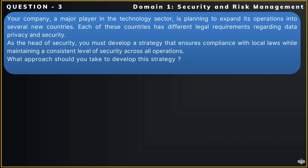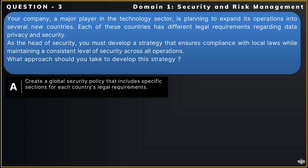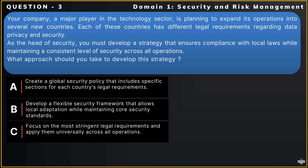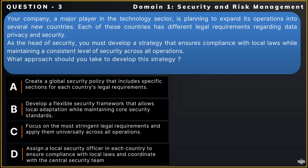The options are: Option A — Create a global security policy that includes specific sections for each country's legal requirements. Option B — Develop a flexible security framework that allows local adaptation while maintaining core security standards. Option C — Focus on the most stringent legal requirements and apply them universally across all operations. Option D — Assign a local security officer in each country to ensure compliance with local laws and coordinate with the central security team.